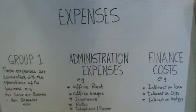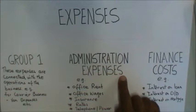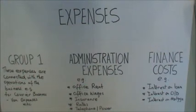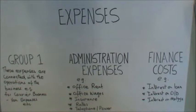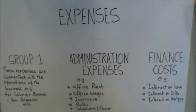The next category is administration expenses. As the name suggests, these are expenses connected directly to administering the business — mainly office expenses. For example, rent the business pays for its office, office wages paid to office staff, insurance premiums paid on different risks covered, rates the business has to pay, and telephone and power. There will be more expenses under this category as you gain confidence.